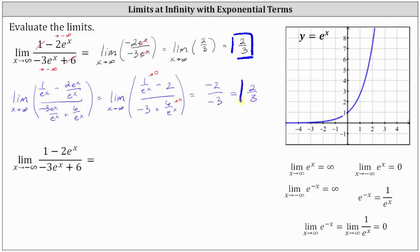So either approach is a valid method for determining the limit as x approaches infinity. Now for the second limit, we have the limit of the same function, but now as x approaches negative infinity. Let's begin by checking the form. One is not affected by x, and then we have minus two times e to the x. E to the x approaches zero as x approaches negative infinity, which we can verify from the graph on the right showing y equals e to the x. Notice as x approaches negative infinity, the function values approach zero. So e to the x approaches zero, and so does two times e to the x.